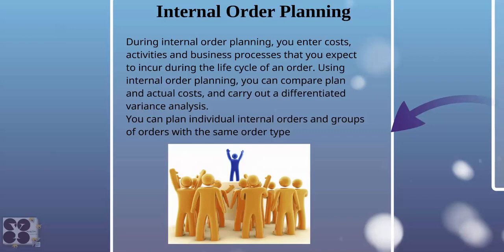You can plan individual internal orders and groups with the same order type. For example, for an advertisement campaign you may have radio, TV, and internet — you can plan costs associated with each type separately, or group them together as 'media advertisement.' You can differentiate by newspaper, radio, or internet, or club them together. That is how you can plan in internal order planning.